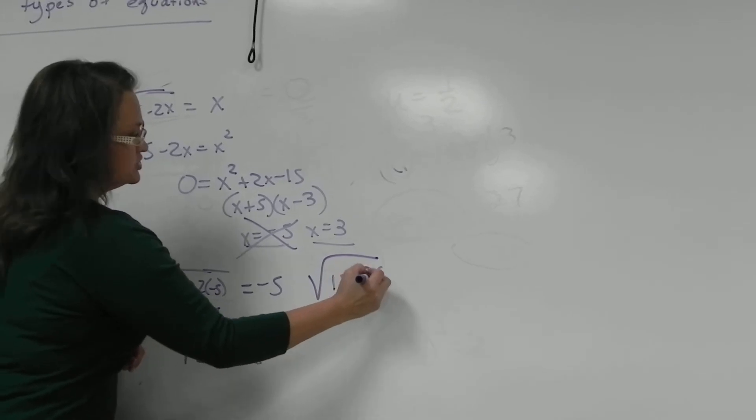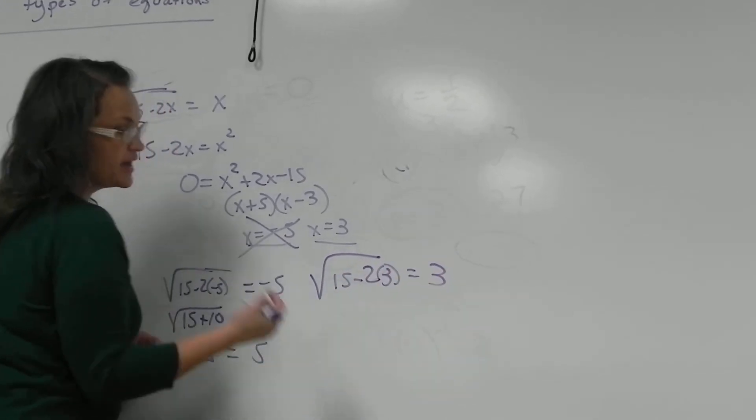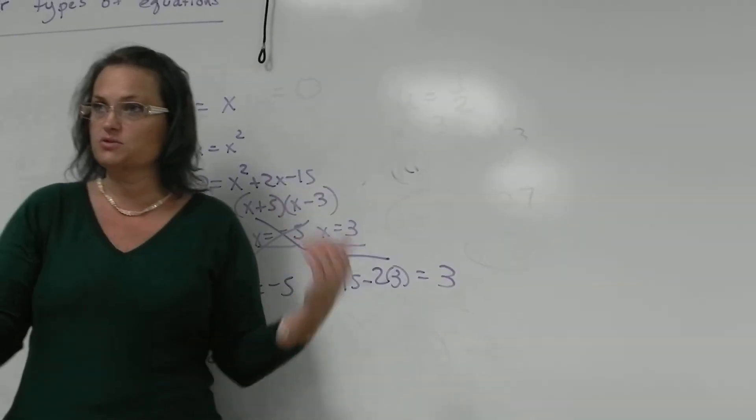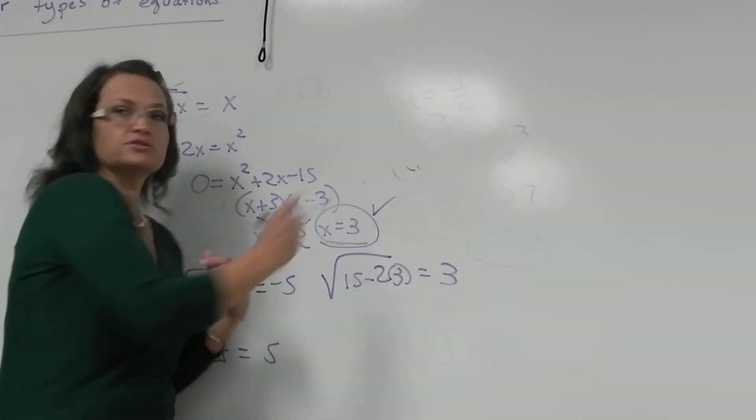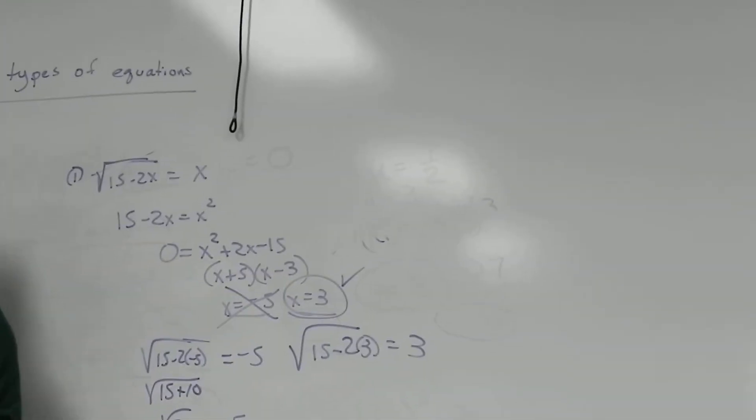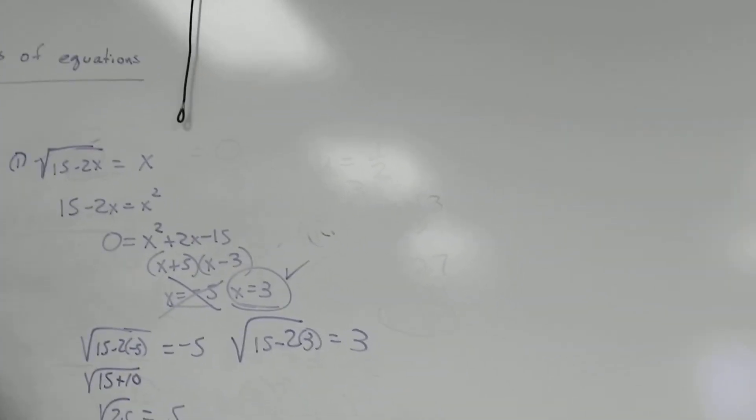Check the three. Is the square root of 15 - 2 times 3 equal to 3? And it is. That's 15 - 6, which is 9. The square root of 9 is 3. That answer checks out. So that's the only one we check, you know, that we bubble in.